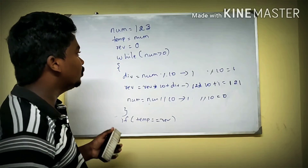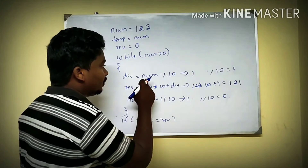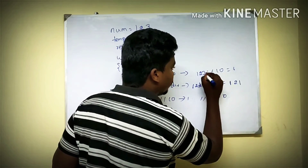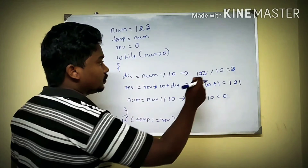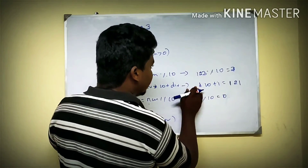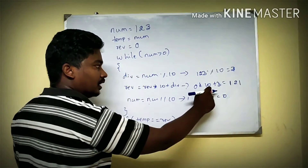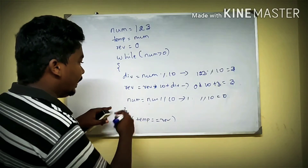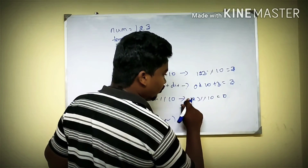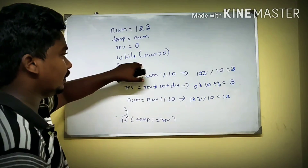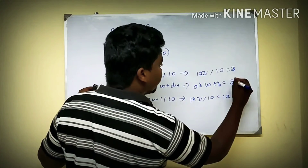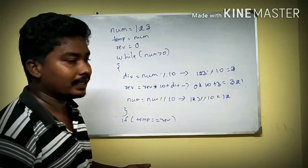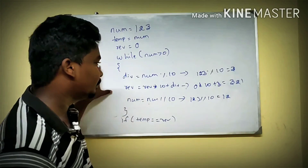Now we check the condition. We have divided by 10 step by step — dividing by 1, 2, 3. After each step the remainder is added. For example, 0 into 10 plus 3 gives 3. Then 3 divided by 12 gives us the result. The final value is 3, then 2, then 1. Then we check: if temp equals reverse, it is a palindrome; if not equal, it is not a palindrome. This is the simple logic of the palindrome.